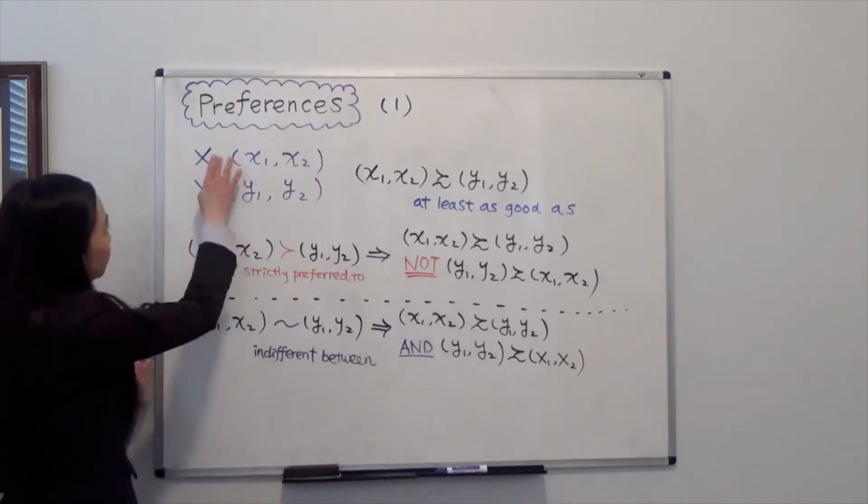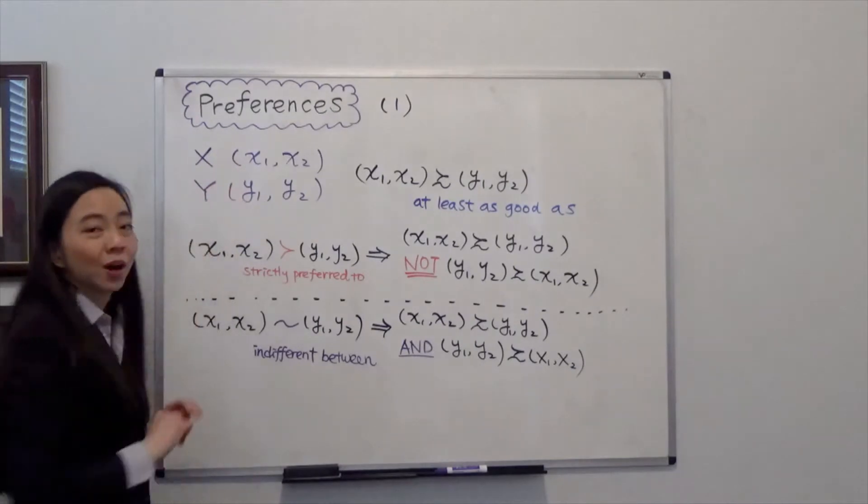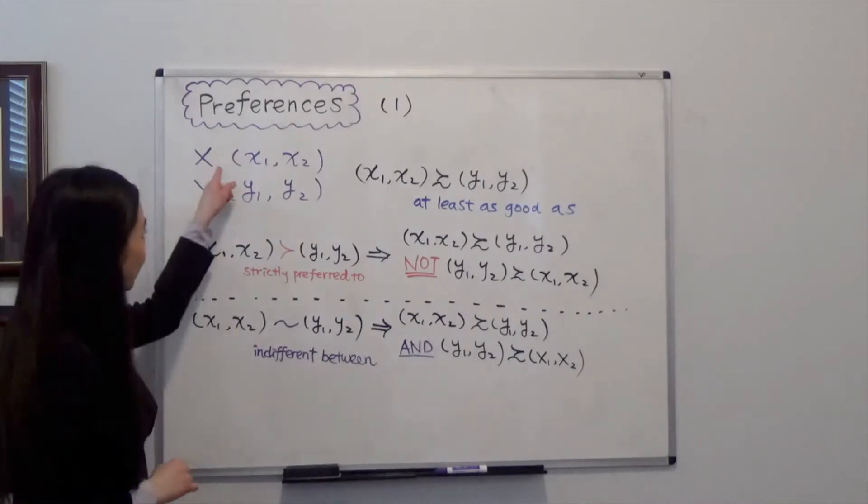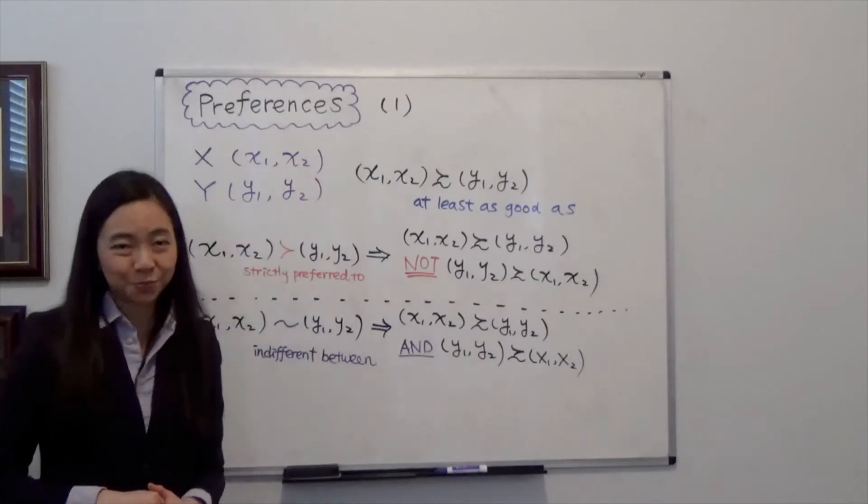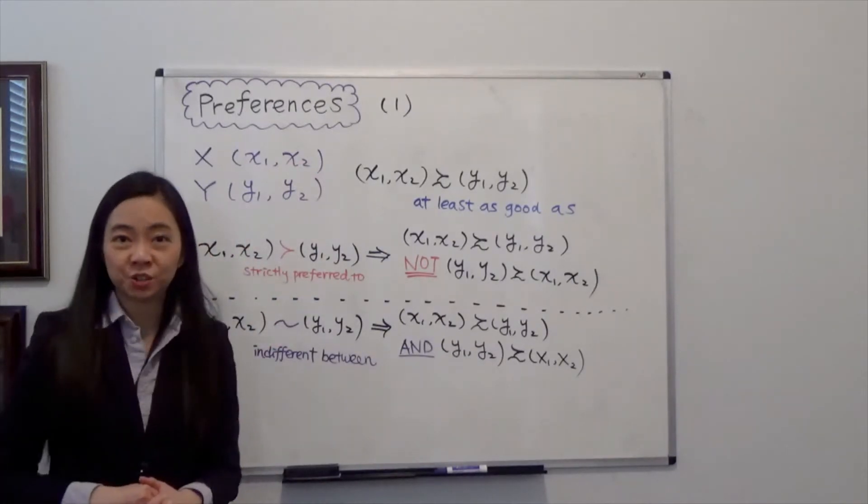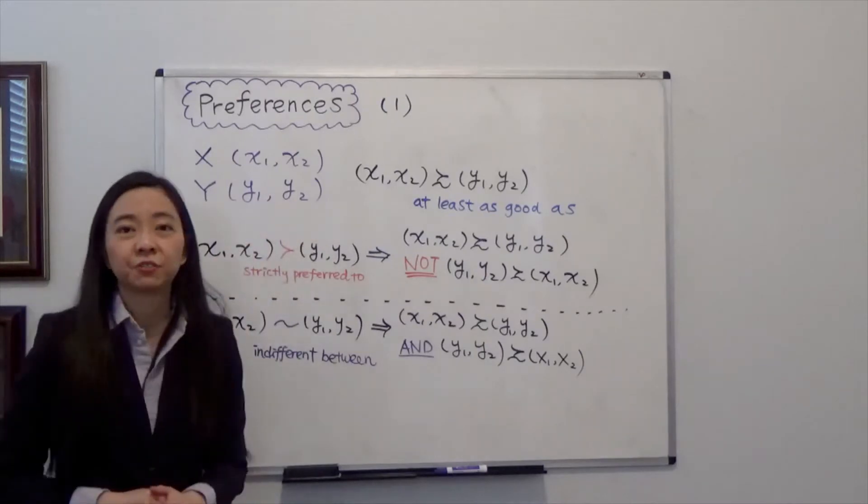Suppose we have consumption bundle X and Y, and bundle X has X1 unit of good 1, X2 units of good 2. Bundle Y has Y1 units of good 1 and Y2 units of good 2.